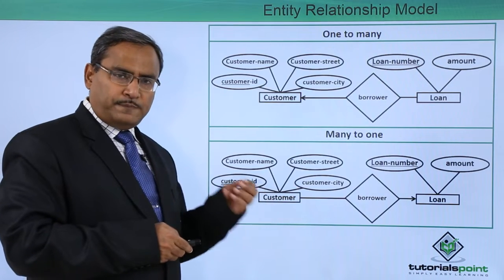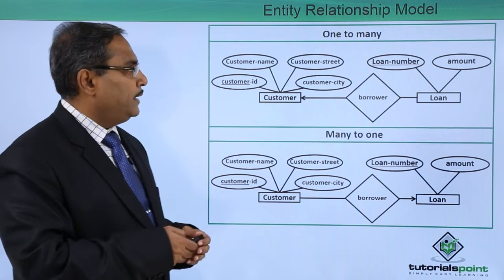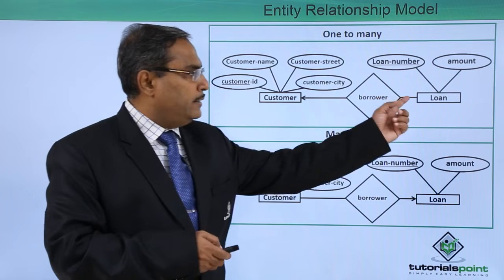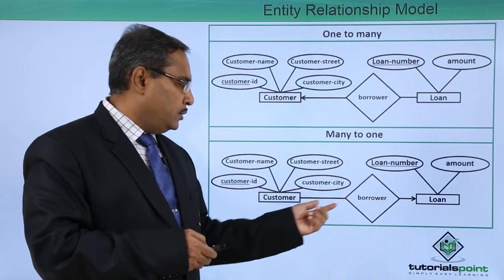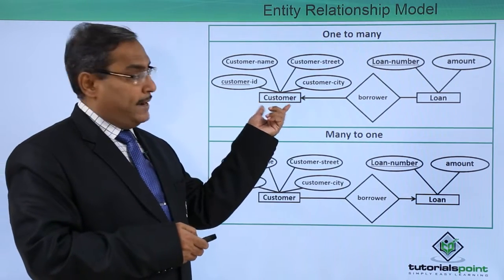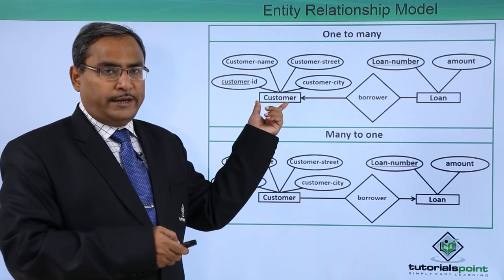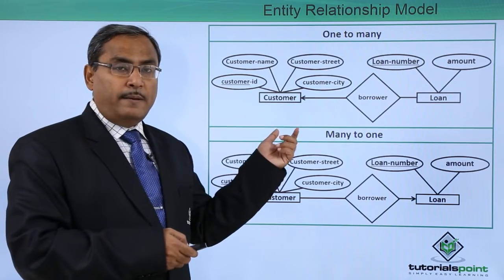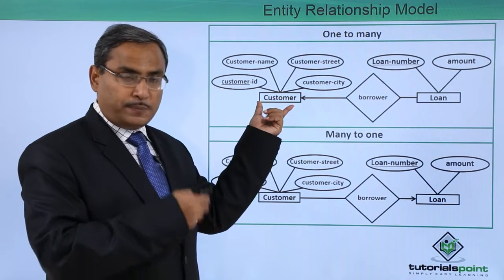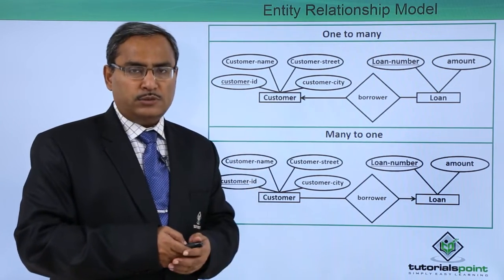Let us go through some examples to explain how mapping cardinalities work. For one to many, an arrow appears on the 'one' side and no arrow on the 'many' side. For many to one, many has no arrow but one has an arrow. One customer can have multiple loans, but against one loan there is only one customer. This bank can provide multiple parallel personal loans — against one customer there will be multiple loan numbers.